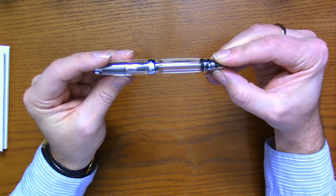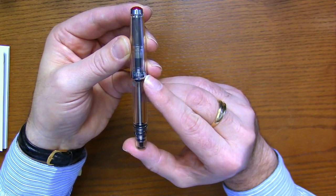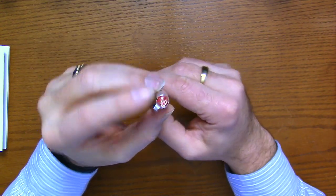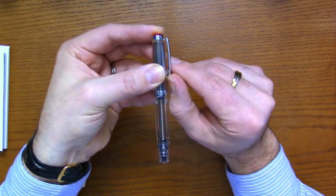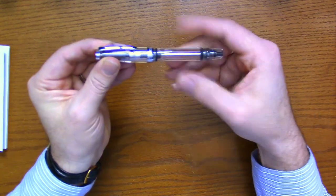TWSBI here on the cap band. On the back it says VAC Mini. Your top's got your traditional TWSBI logo and some spring in the clip there. Let's take a look.